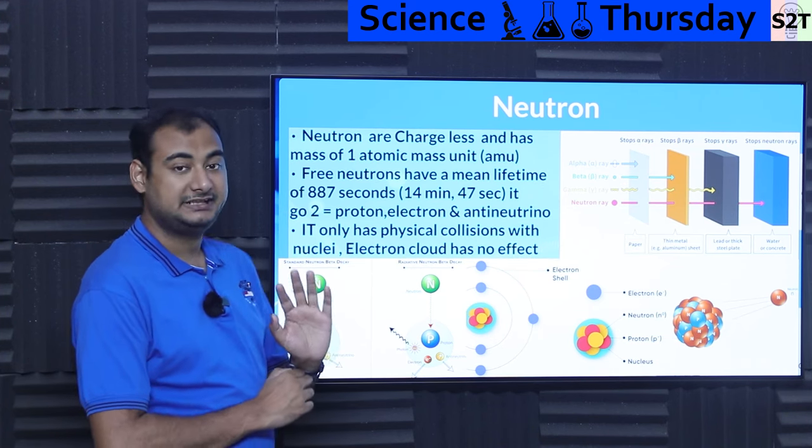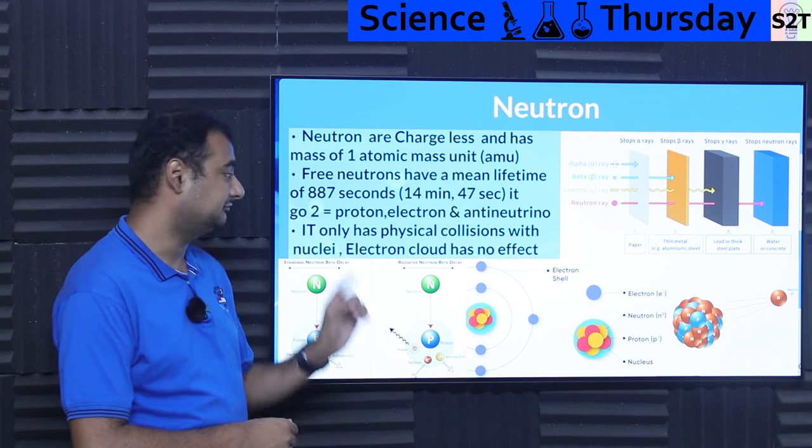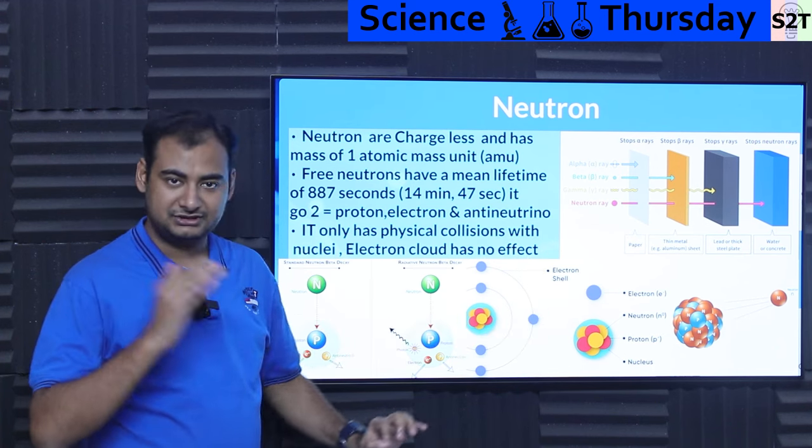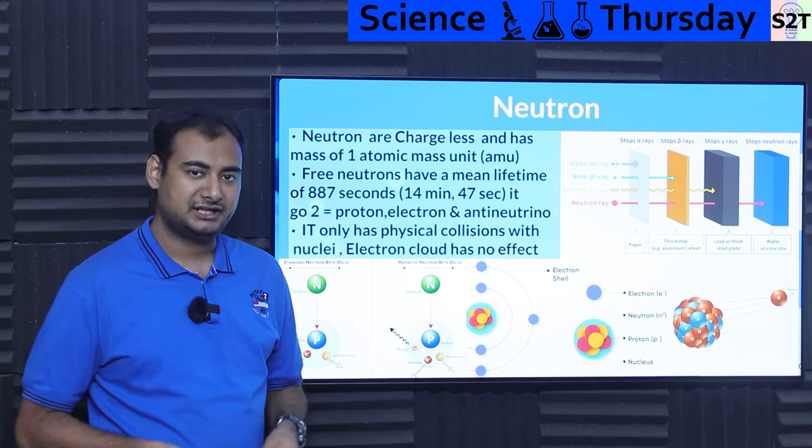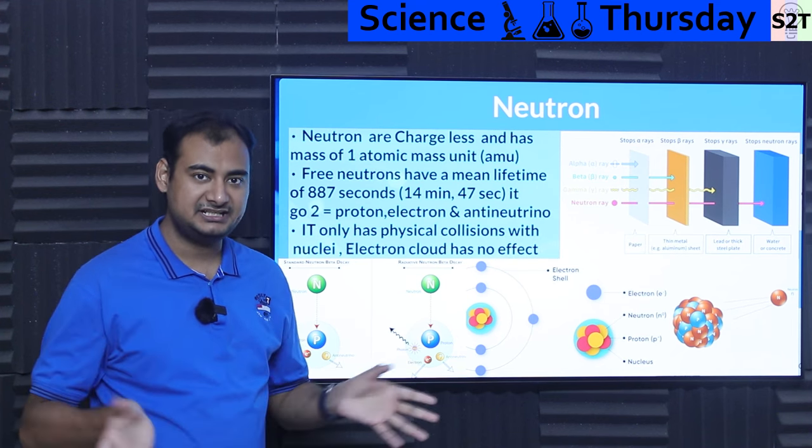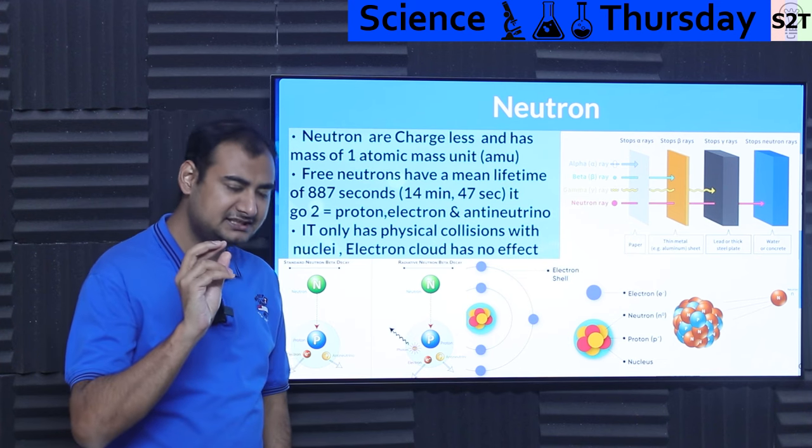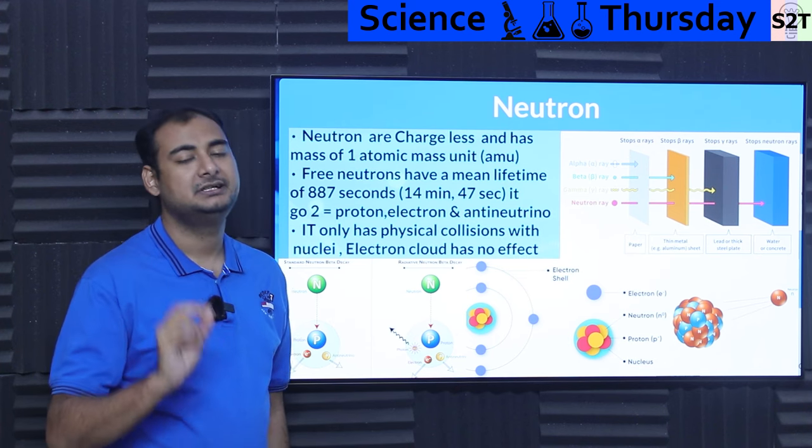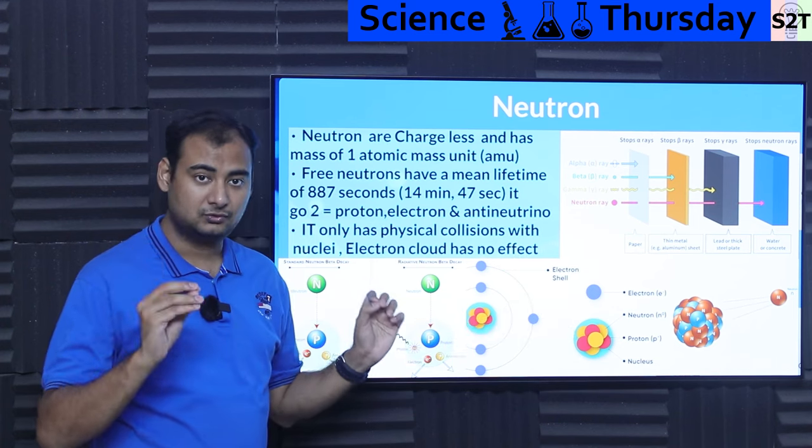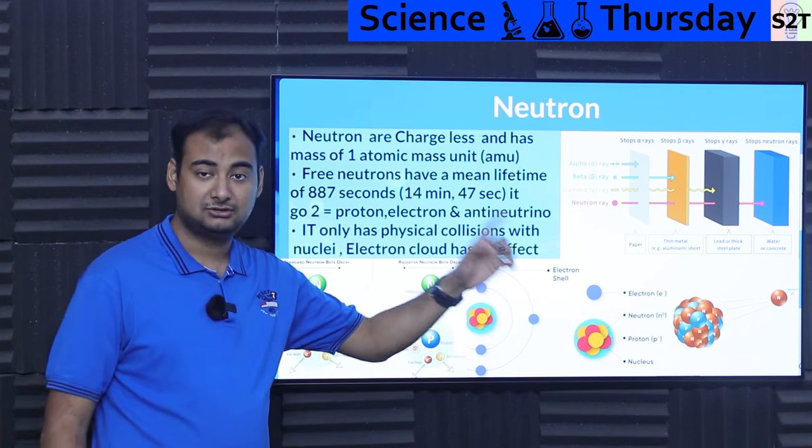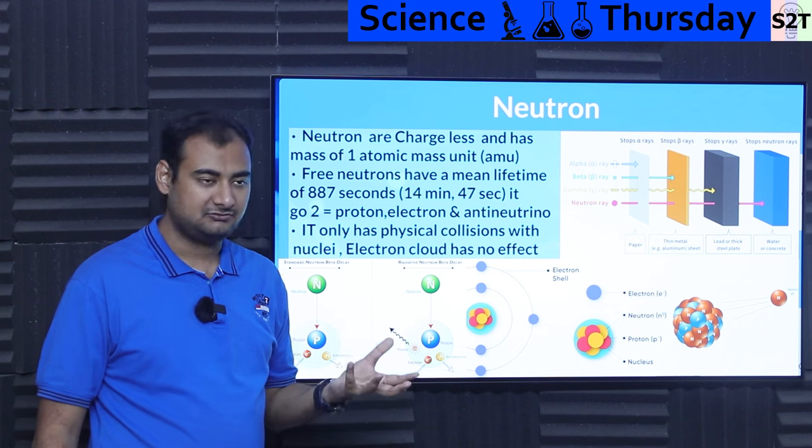And it only has collision with nucleus. Meaning if it's going through stuff, what is stuff? Stuff is made out of atoms. What is atom made out of? Well 99.99% empty space. That empty space is electron cloud. Only in the center, if you zoom the hell in, only in that place you find the nucleus. The neutron can only interact with this nucleus.